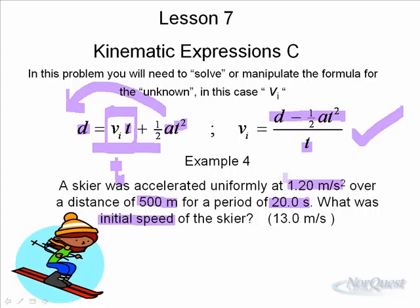Now, one thing they could ask also with this question, they could have an a part and a b part. They might ask, what was the final velocity of the skier? And so you could use a number of different ways to solve that. They sometimes make these questions two part.